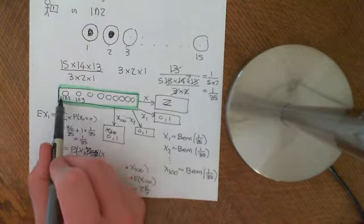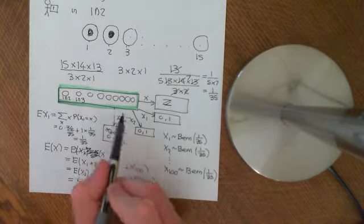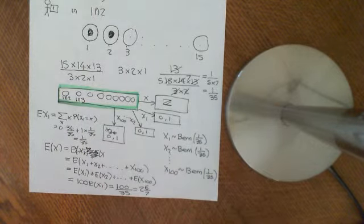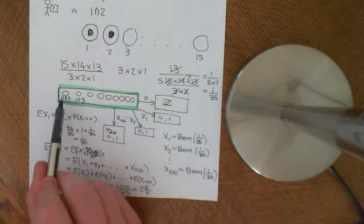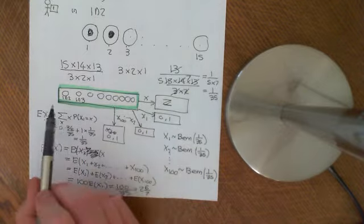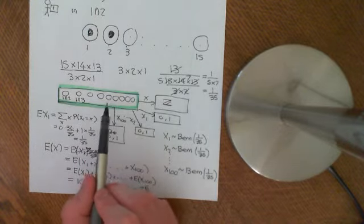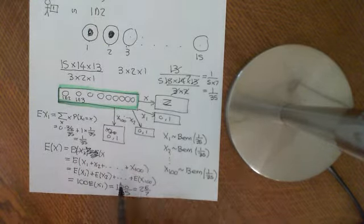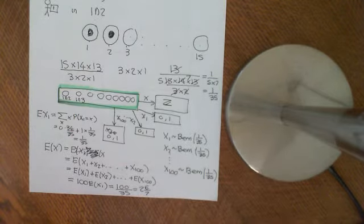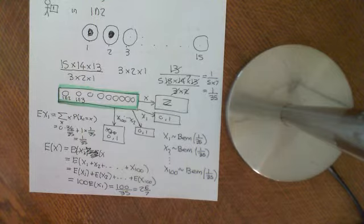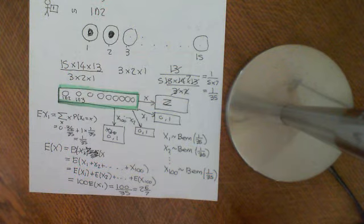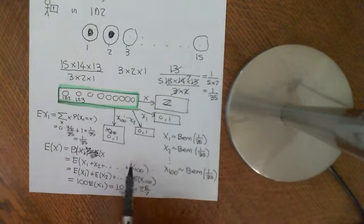Which means that one of these intersections must have contained at least 3 people, because if they'd all contained less than 3 — only 0, 1, or 2 people — you cannot possibly average 2 and 6 sevenths. So there we have used linearity and concepts from conditional expectation to prove something that would be very difficult to prove without using linearity.